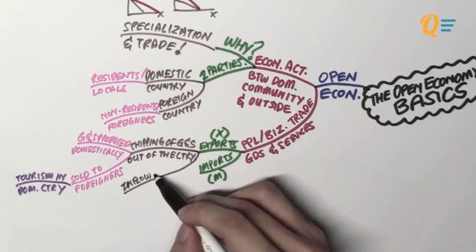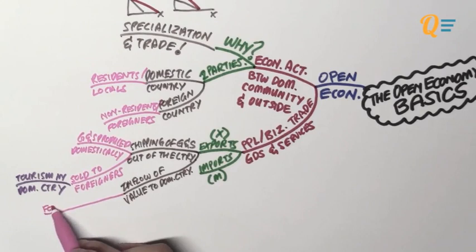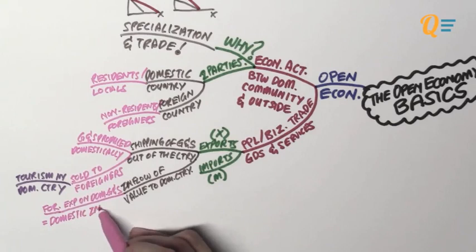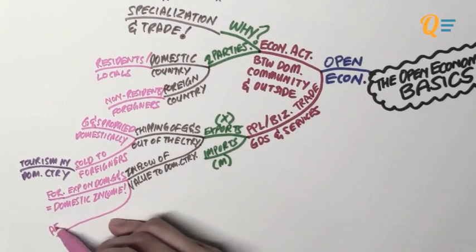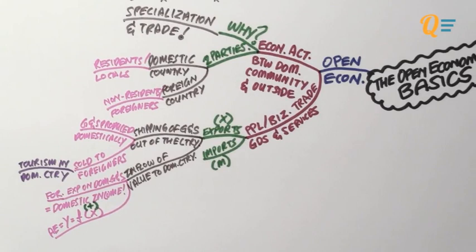Another way to explain exports is that these are actually inflows of value to the domestic country. Why is it an inflow since we are selling stuff? I'm talking about inflow of value, because any foreign expenditure on domestic goods and services is actually domestic income — it is income to the home country. They are the ones that created the goods and services. And that is why aggregate expenditure and the GDP is going to have a positive relationship with exports. When exports increase, your AE and your income is going to increase.